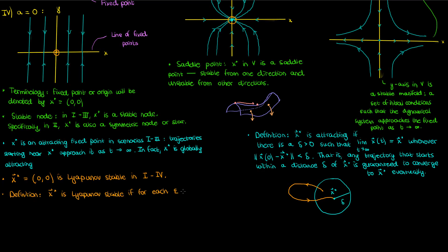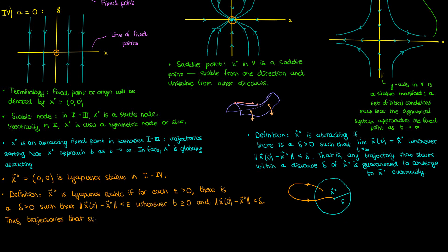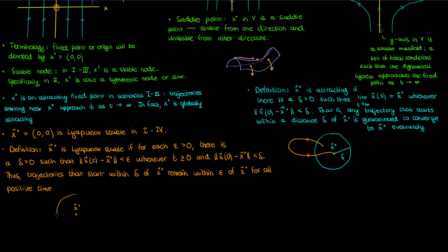The formal definition of a Lyapunov stable fixed point: trajectories that start within delta of x-star remain within a positive number epsilon of x-star for all positive time. So if my arbitrary initial condition is within a distance delta of x-star, and that initial condition stays within some finite epsilon of x-star for all time, then x-star can be called Lyapunov stable.